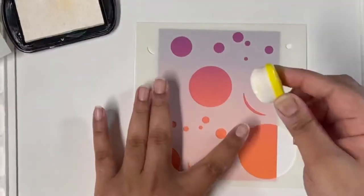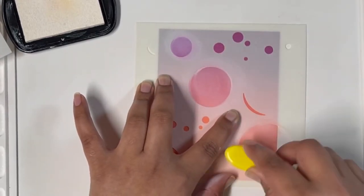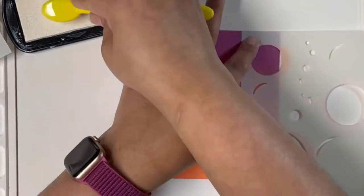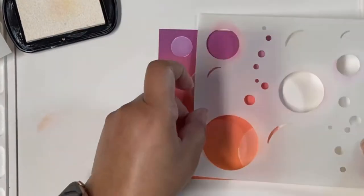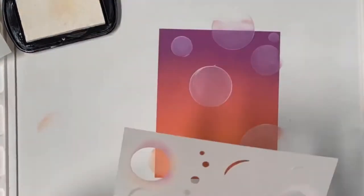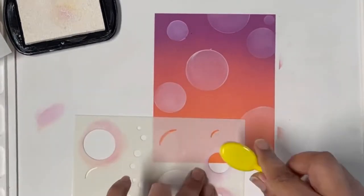I'm going to repeat the same steps for my next background, but before moving on, I cleaned my stencil, work surface, and blending brush nicely so I don't have any residual ink left. I'm going very light-handed with my first stencil, the Big Bubble Stencil from Lawn Fawn.